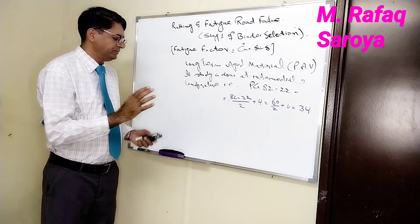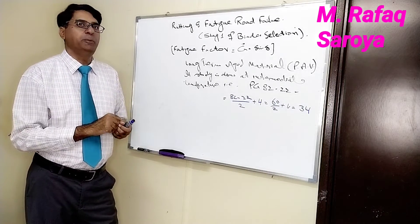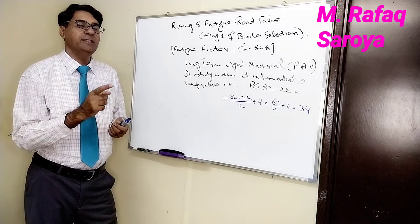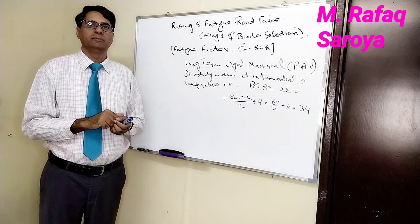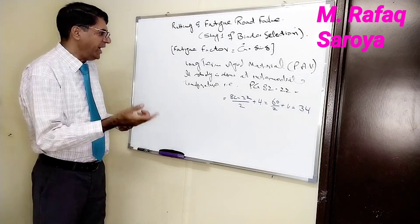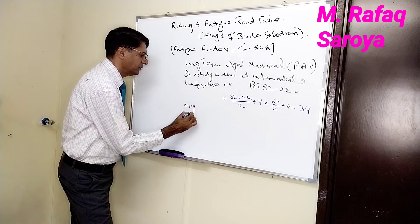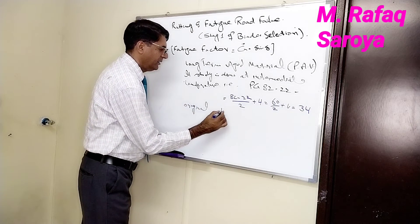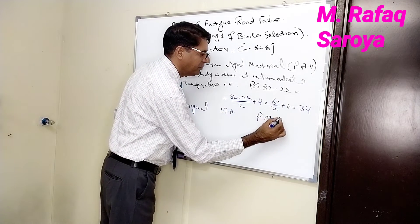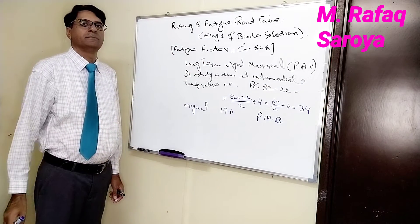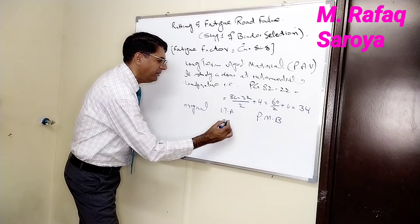This test is performed on long-term aged material, which is more flexible compared to the original binder. We can say that the original binder is less flexible than the long-term aged material, and the long-term aged material is also compared with the polymer modified binder (PMB). The maximum specification limit defined here is 5 MPa.